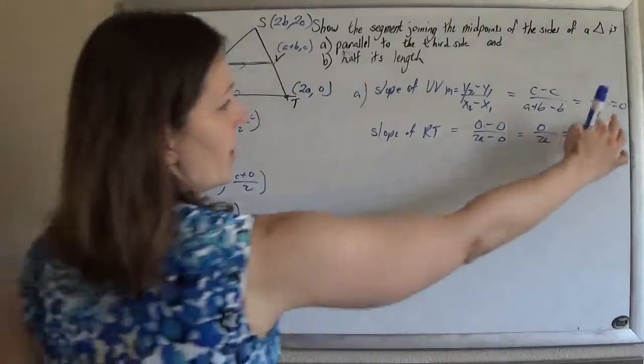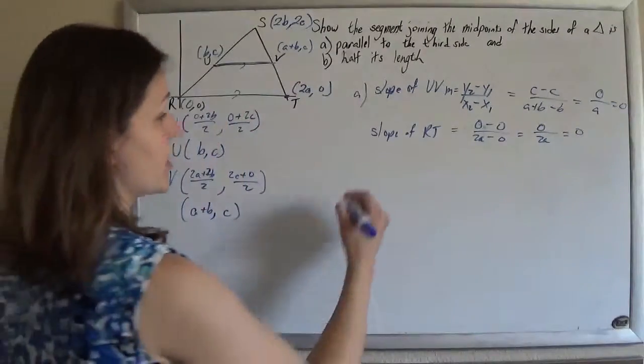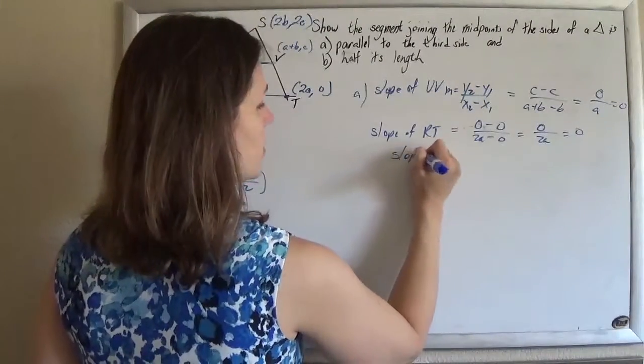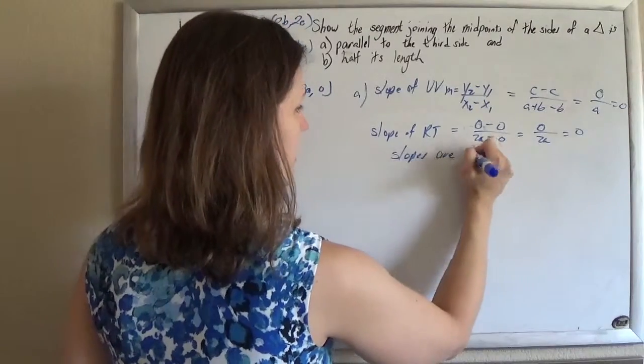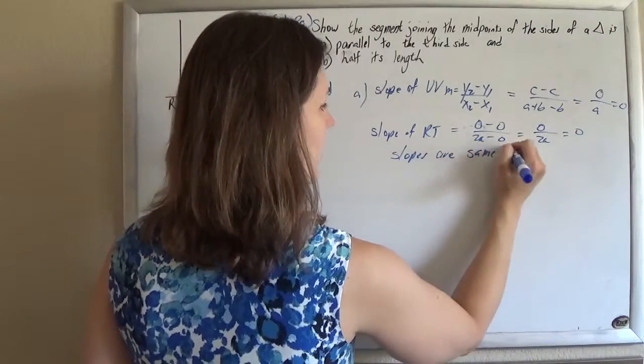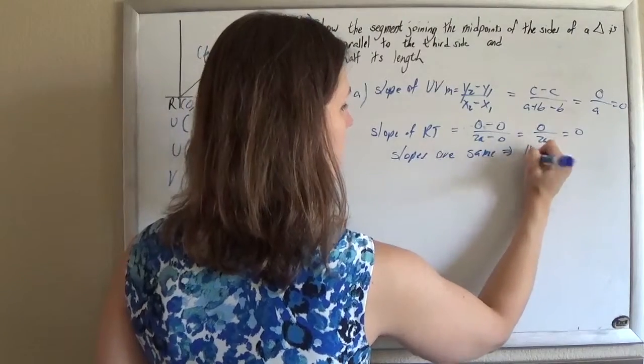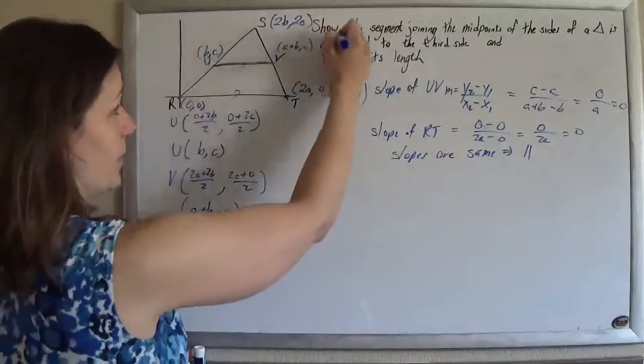And so, hey, look, the slopes are the same. They're both 0. So they don't have to be 0, but as long as they're the same, that means that the lines are parallel. So, hey, check, right? Bam.